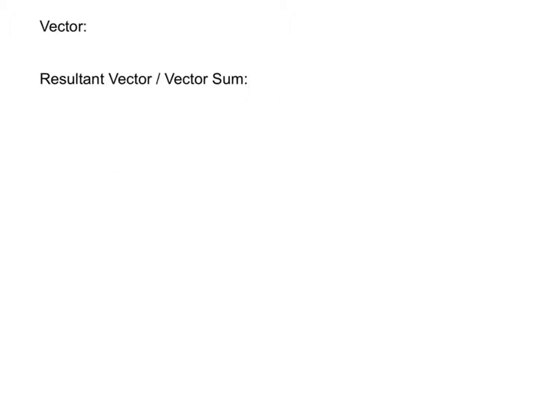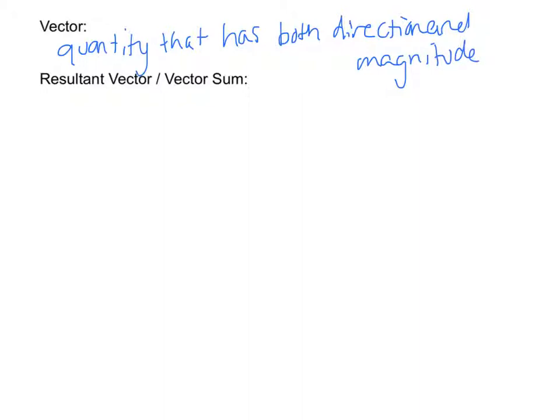This is somewhat related. Really important, though. We're going to talk about vectors. A vector is a quantity that has both direction and magnitude, and it's represented as arrows.